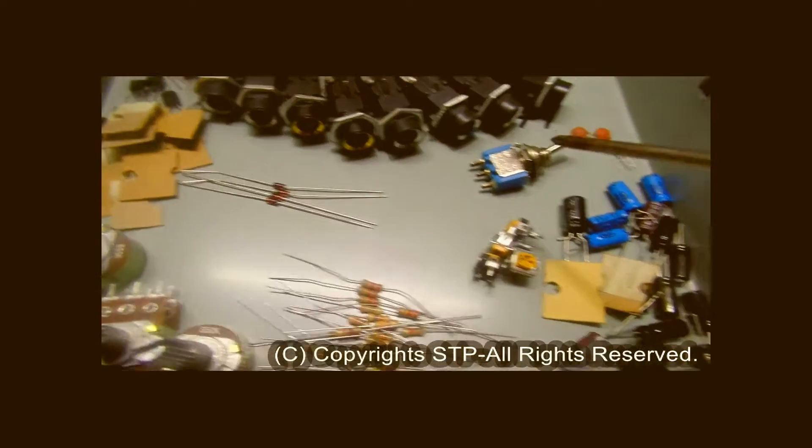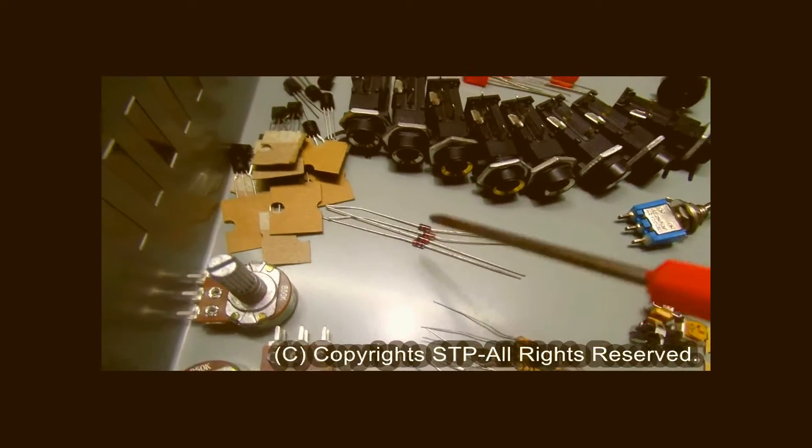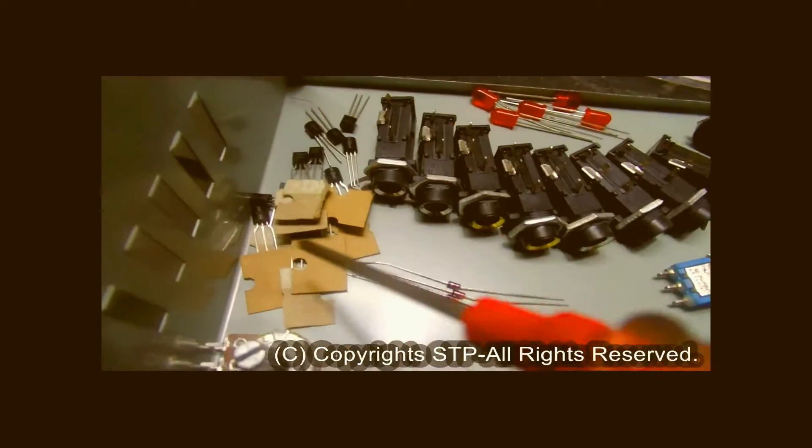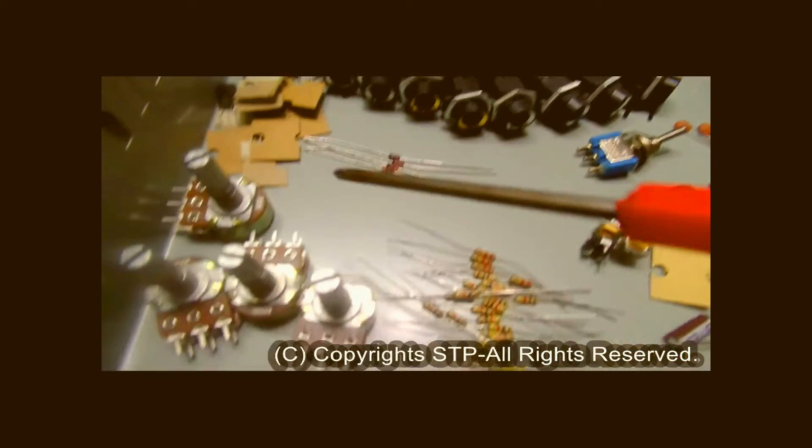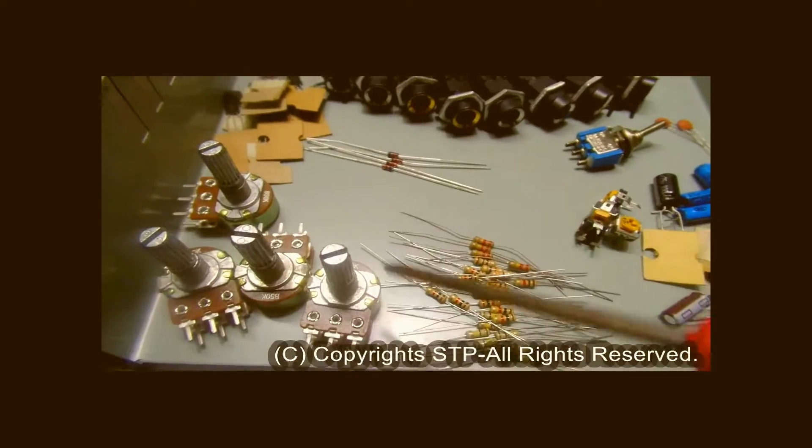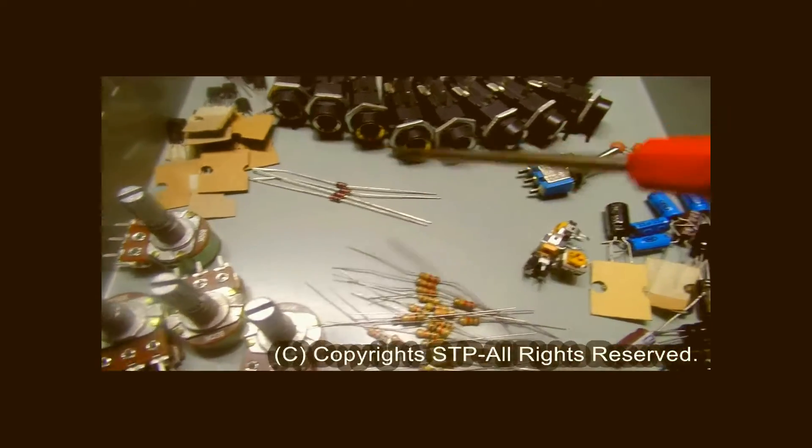This is the toggle switch we will use to turn this preamp on and off. These are the zener diodes and these are the transistors. And these are the potentiometers which we will use to set the gain of each channel.